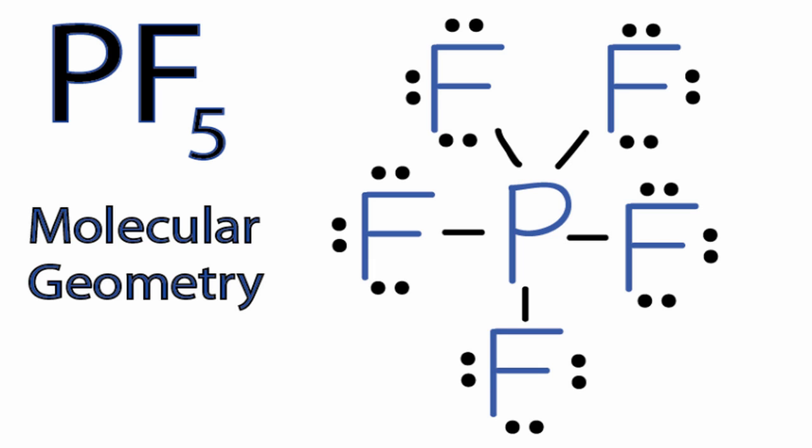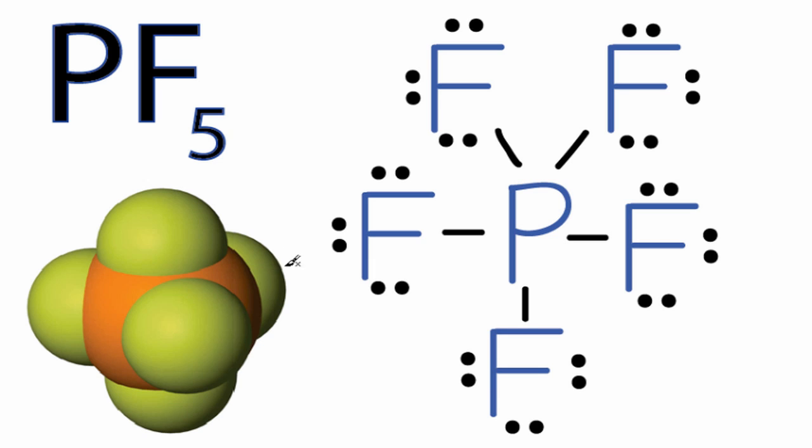That would look something like this. So we have the phosphorus in the middle, and then around it we have these fluorine atoms. You can see those fluorine atoms have really spread out around the central phosphorus atom. This gives us a trigonal bipyramidal molecular geometry for PF5.